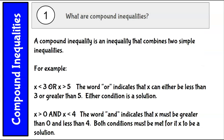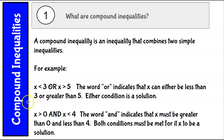A compound inequality is an inequality that combines two simple inequalities. For example, a compound inequality is x is less than 3 or x is greater than 5 — this counts as one compound inequality combined from two simple inequalities. The word 'or' indicates that x can be either less than 3 or greater than 5; either condition is a solution.